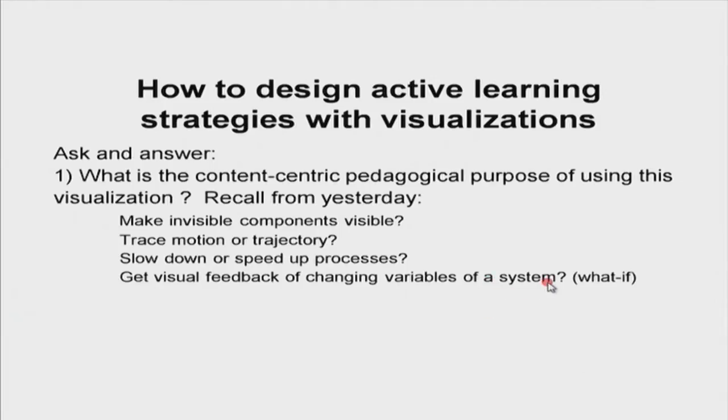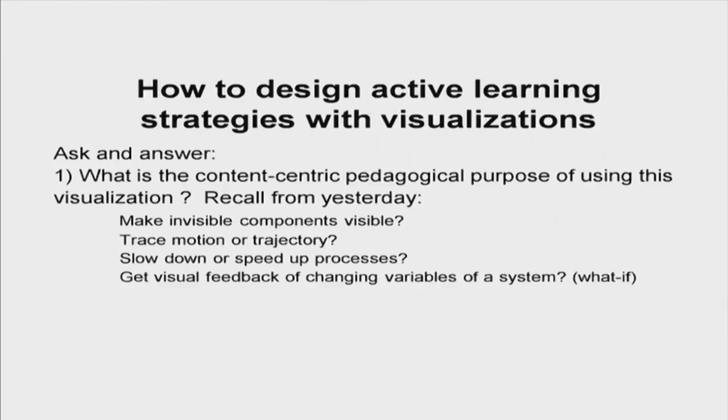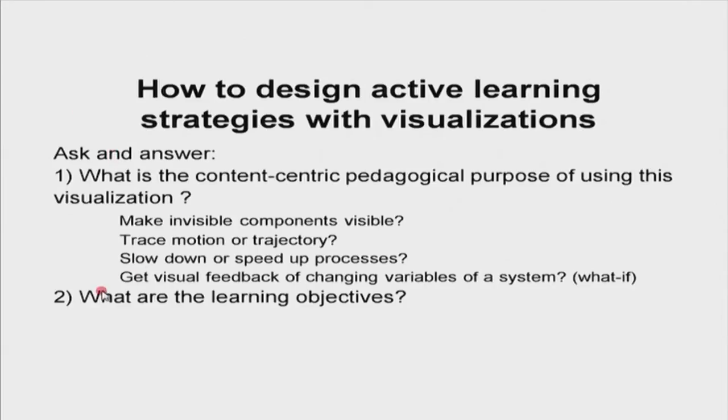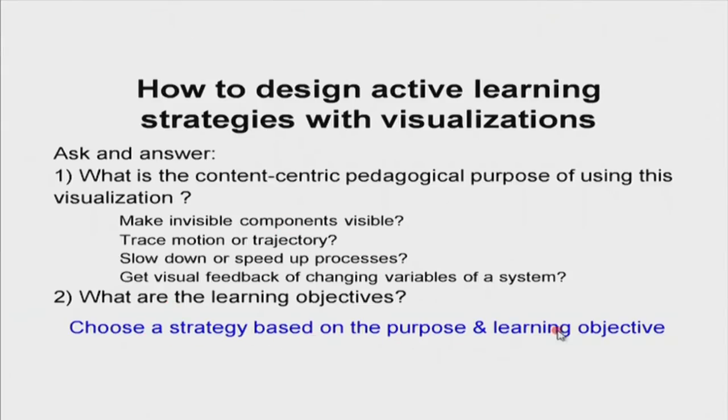A large category of goals in engineering and science classrooms involves a system with interacting objects where variables are changed — you increase a value, decrease it, change its position — and you want visual feedback of what happens in the system. All these 'what if' and experimentation scenarios can use videos and simulations. Simulations are particularly useful for changing variables and seeing the effects on a system, whether it is a machine, gas molecules, signals, internet packets, or fluid flow.